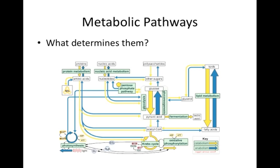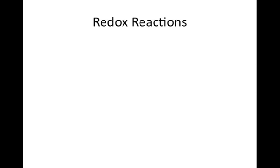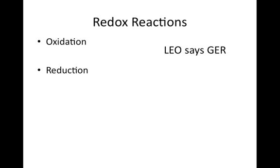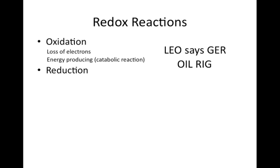You can see that the anabolic and catabolic reactions are really just opposites of each other. Redox reactions refer to oxidation and reduction reactions. You may remember some of the mnemonic devices associated with them: LEO says GER stands for lose electrons oxidized, gain electrons reduced; OIL RIG stands for oxidation involves loss, reduction involves gain. So when we talk about oxidation, we mean a loss of electrons. Oxidation reactions are catabolic reactions because they produce energy. When we talk about reduction, we mean a gain of electrons.